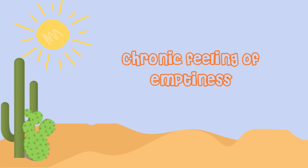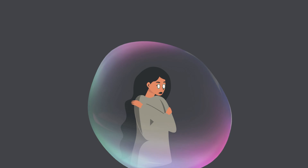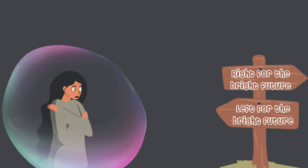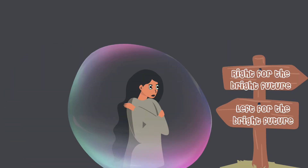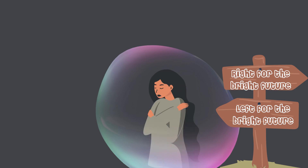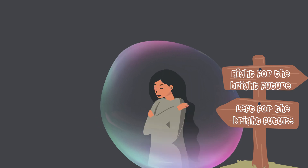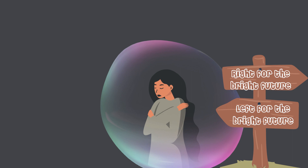The seventh criterion is chronic feelings of emptiness. People with BPD describe emptiness as a sense of nothingness and numbness. They feel disconnected from self and others, and may say they are a soul without a purpose.